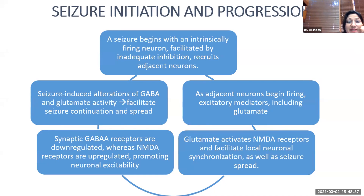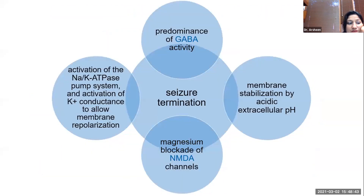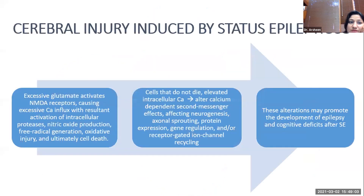Seizure-induced alteration of GABA and glutamate activity facilitates seizure continuation and spread. Mechanisms implicated in seizure termination include predominance of GABA activity, membrane stabilization by acidic extracellular pH, magnesium blockage of NMDA receptors, activation of sodium-potassium ATPase pump, and activation of potassium conductance to allow membrane repolarization. Excessive glutamate activates NMDA receptors causing excessive calcium influx, resulting in activation of intracellular proteases, nitric oxide production, free radical generation, and oxidative stress leading to cell death.